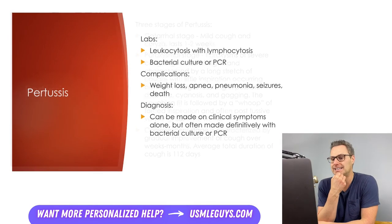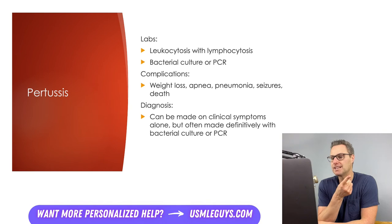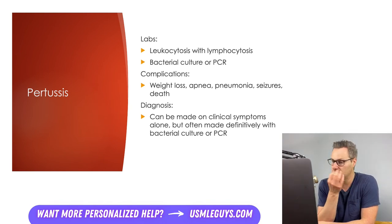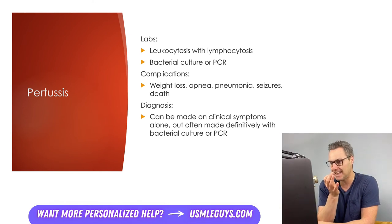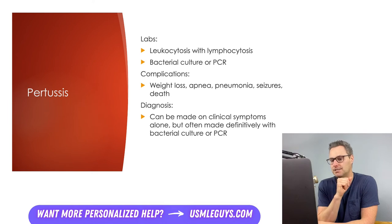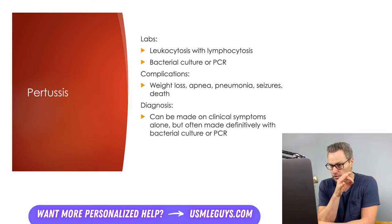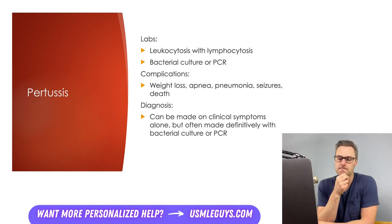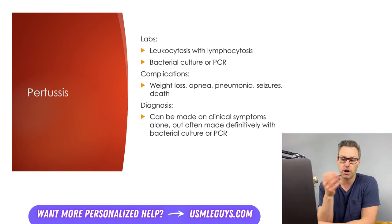Lab abnormalities seen in pertussis include leukocytosis with lymphocytosis, and severe elevations in leukocytosis above 60,000 white blood cells per microliter are associated with increased disease severity. Tests that can provide a definitive diagnosis include a positive bacterial culture or a positive PCR. Chest radiographs will typically appear normal in this condition and therefore aren't typically warranted.